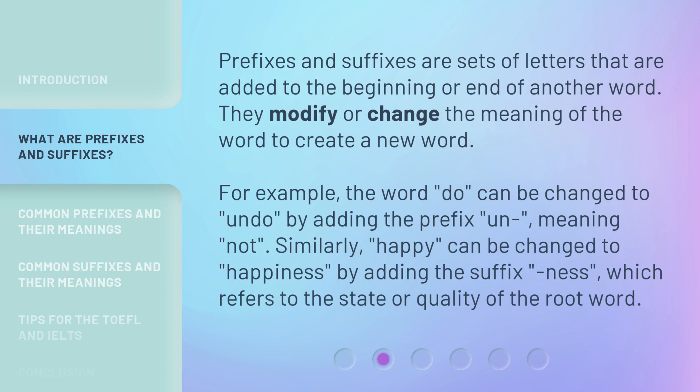Prefixes and suffixes are sets of letters that are added to the beginning or end of another word. They modify or change the meaning of the word to create a new word. For example, the word 'do' can be changed to 'undo' by adding the prefix 'un', meaning 'not'. Similarly, 'happy' can be changed to 'happiness' by adding the suffix '-ness', which refers to the state or quality of the root word.